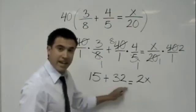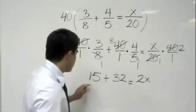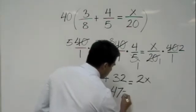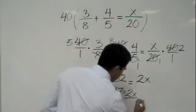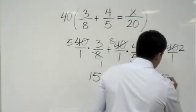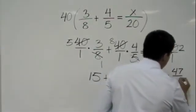So, now, go ahead and add these up. So, 15 plus 32 gives us 47 equals 2x. And you divide both sides by 2. And now, you would say that x equals 47 over 2.